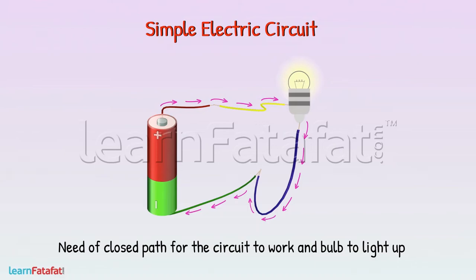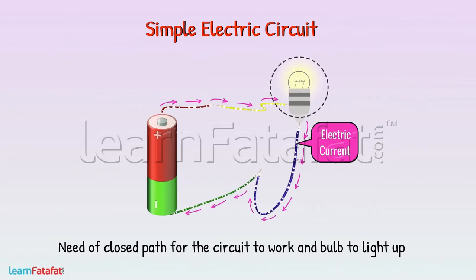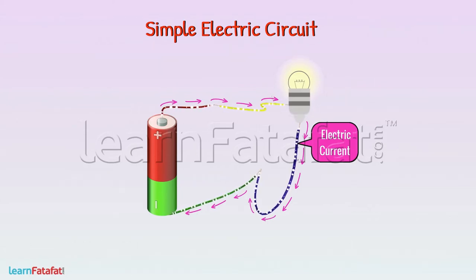The need for a closed path makes us think that there must be something moving through this closed path. We call it electric current. The bulb can only glow when there is electric current in the circuit. The direction of electric current is taken from the positive terminal of the battery to the negative terminal of the electric cell.